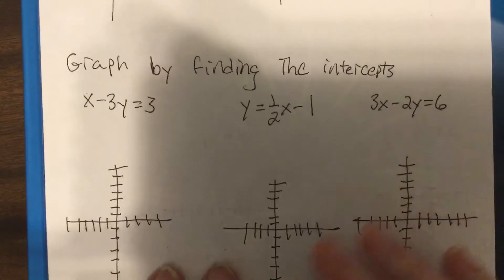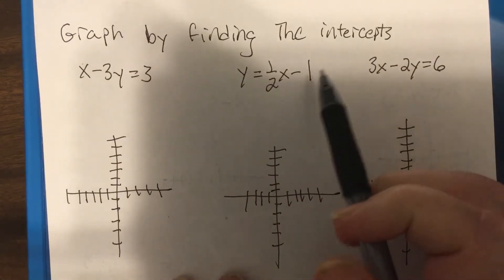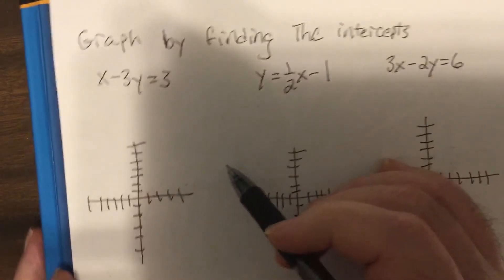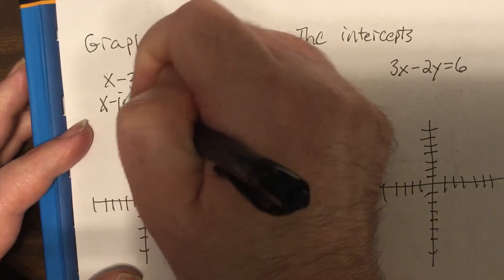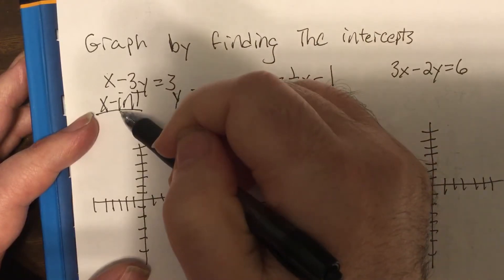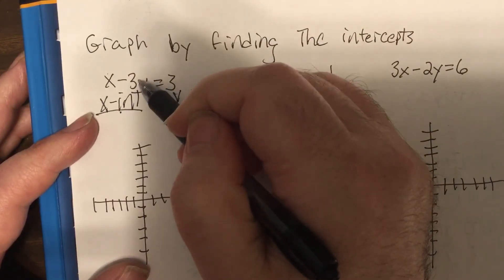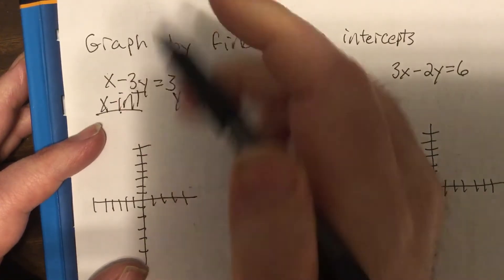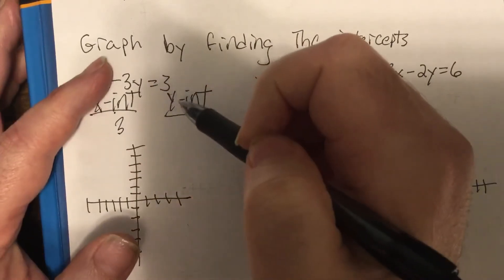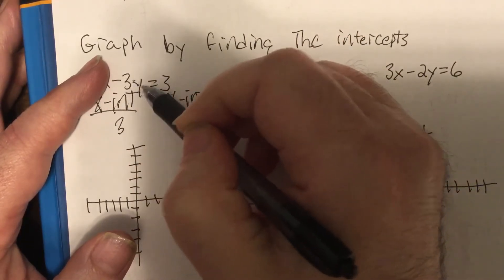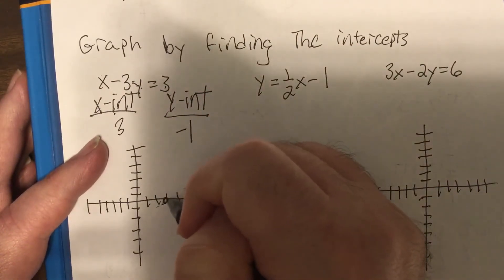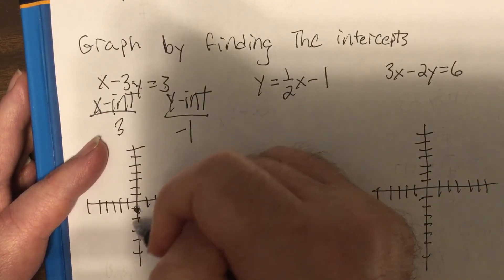Next one: graph by finding the intercepts. For the x-intercept, we put zero in for y — x would be three. For the y-intercept, put zero in for x — negative three y equals three, divide by negative three, it'd be negative one. So x-intercept is three, y-intercept is negative one.